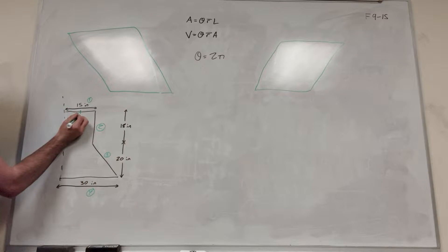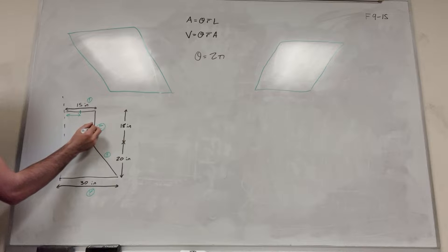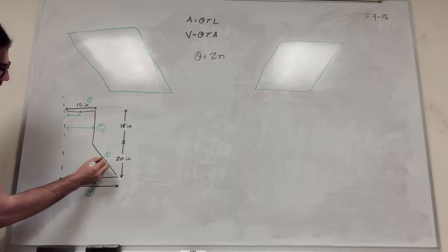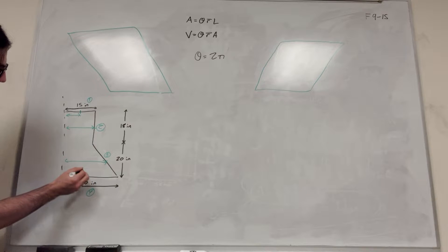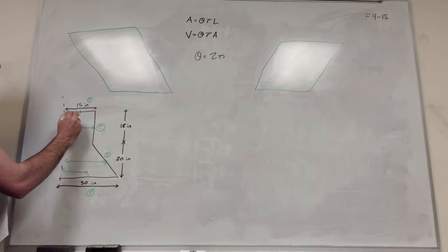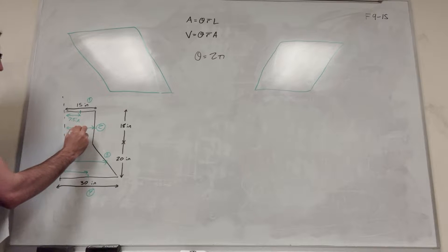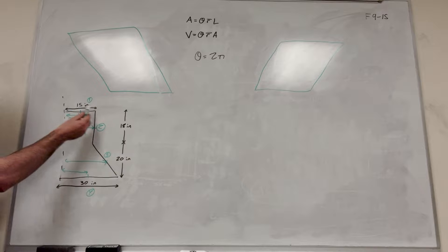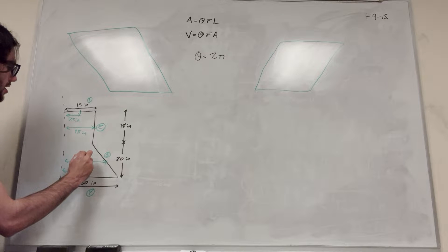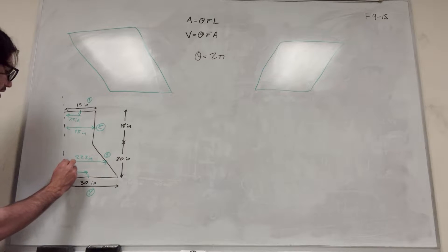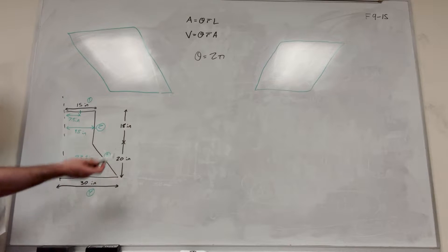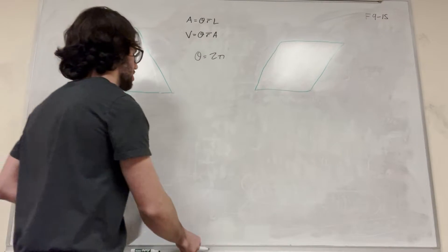The center of each line — for line 1, the center of mass is at 7.5 inches from the axis. Line 2's center is going to be about 15 inches from the y-axis. Line 3 is halfway through its length, so that's 15 inches plus half of 15 inches, which is 22.5 inches. And line 4's center is half of 30 inches, which is 15 inches. So we've found all of our r̄ values, and now we just need to find the lengths of each line, which is pretty much given to us.